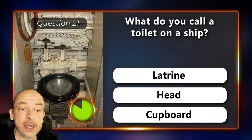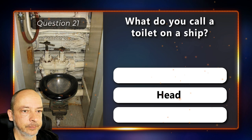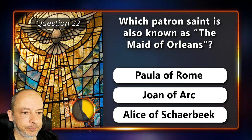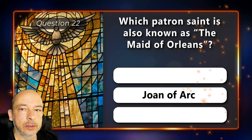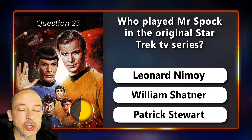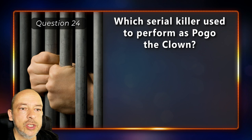Question 21: What do you call a toilet on a ship? Is it a latrine, a head or the cupboard? It's called the head. Question 22: Which patron saint is also known as the Maid of Orleans? Is it Paula of Rome, Joan of Arc or Alice of Sharbeek? Joan of Arc. Question 23: Who played Mr. Spock in the original Star Trek TV series? Is it Leonard Nimoy, William Shatner or Patrick Stewart? Leonard Nimoy.